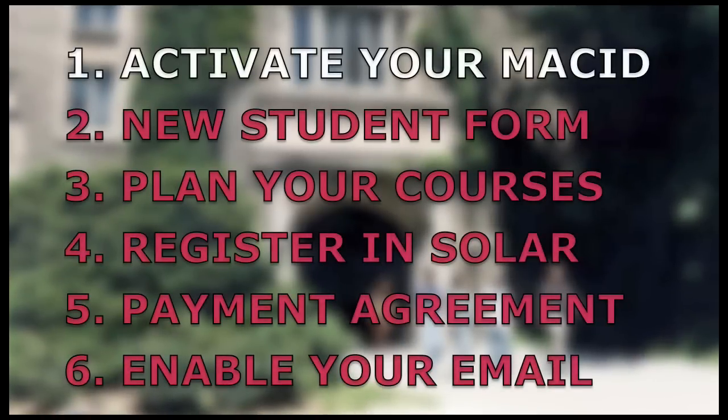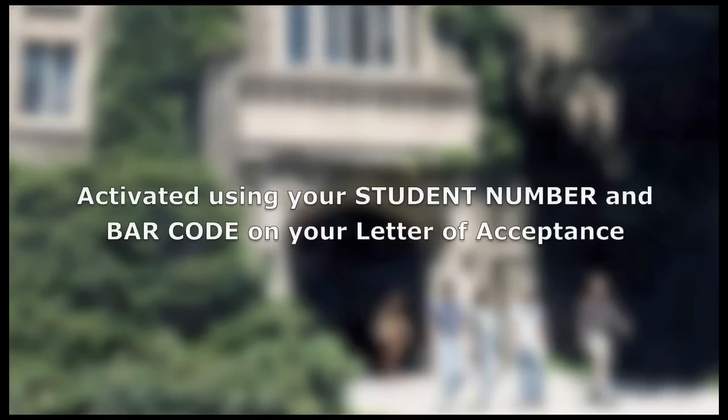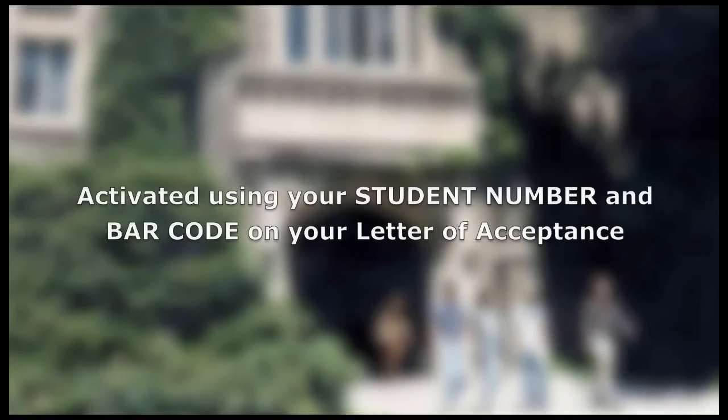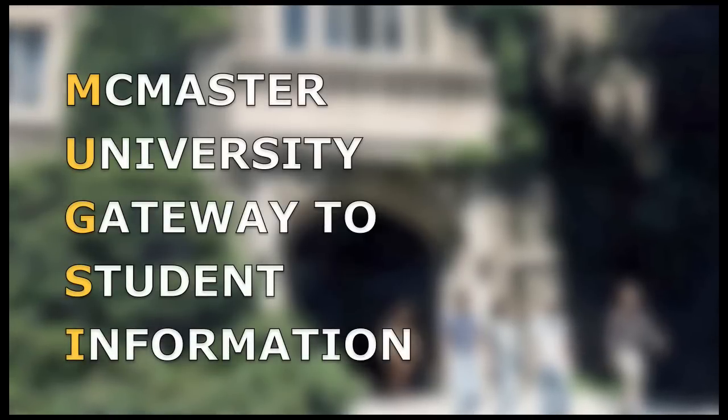Let's begin with the first step: activating your Mac ID and password. Your Mac ID is a unique username that McMaster gives you, combining the letters of your last name and your initials. Your Mac ID is not your student number. Instead, you need to activate it using your student number and a unique barcode, which are located in the top right corner of your McMaster letter of acceptance, which you should have received in the mail. Once your Mac ID is activated, you'll be able to access MUGSI, which stands for the McMaster University Gateway to Student Information.